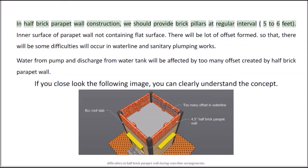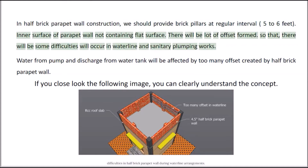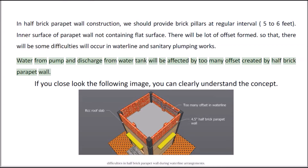In half brick parapet wall construction, we should provide brick pillars at regular intervals of 5 to 6 feet. The inner surface of the parapet wall will not contain a flat surface — there will be a lot of offsets formed. So there will be some difficulties in waterline and sanitary plumbing works. Water from the pump and discharge from the water tank will be affected by too many offsets created by the half brick parapet wall. If you closely look at the following image, you can clearly understand this concept.